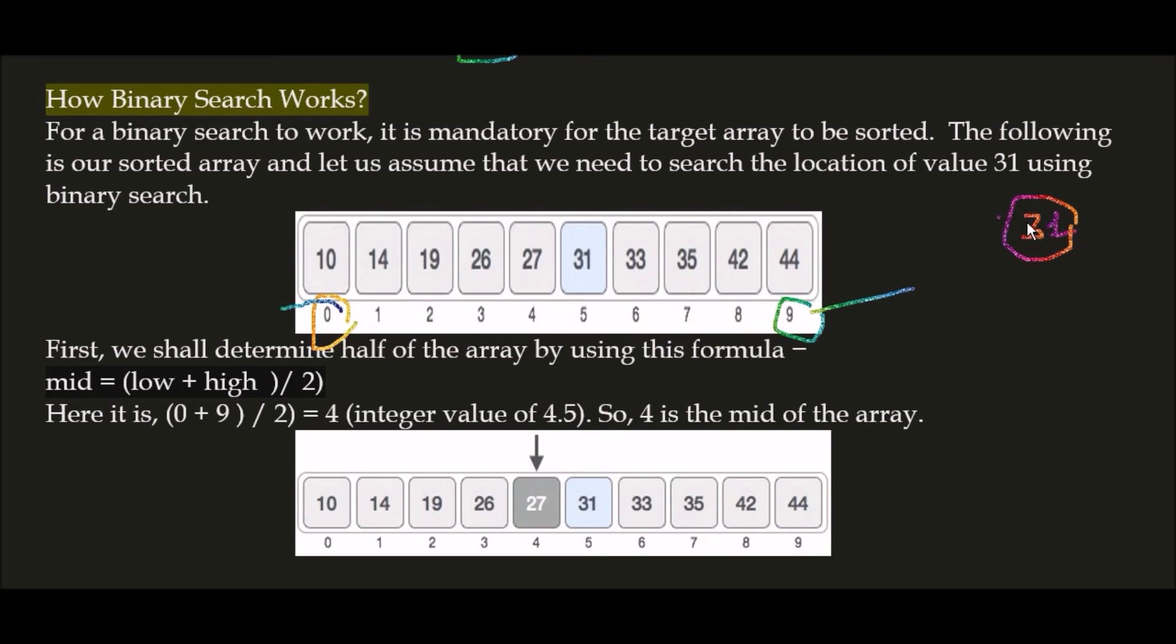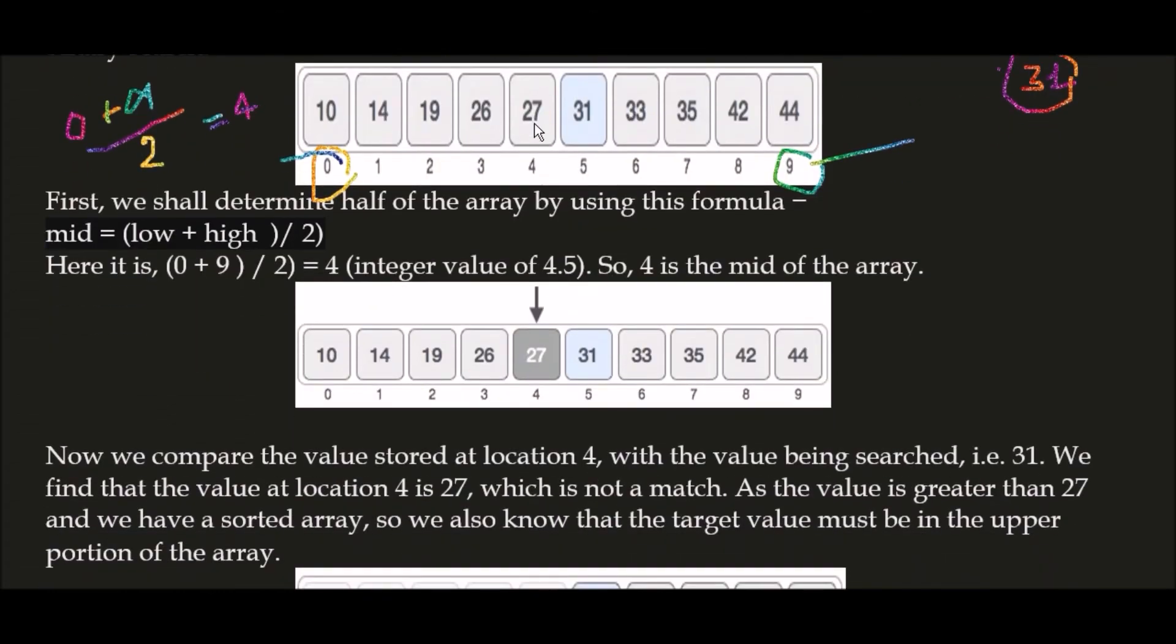How to find this value in this array? First we apply our first step. We've checked the array is sorted. Now we apply our first step: find the mid value with the help of lower index plus higher index divided by 2. Here your lower index is 0 and your higher index is 9, divided by 2.